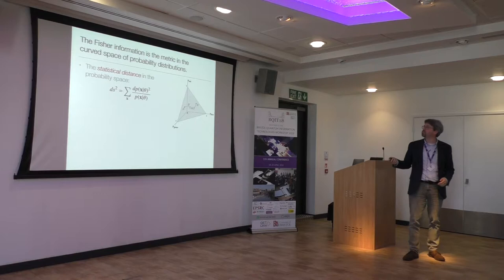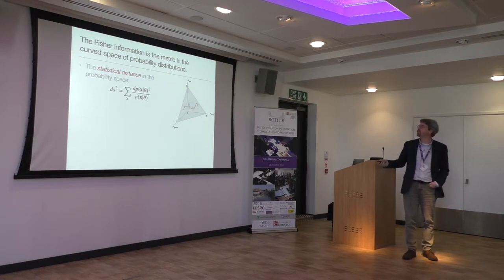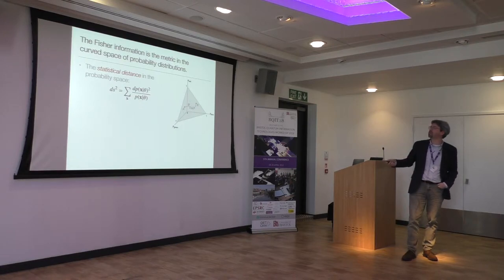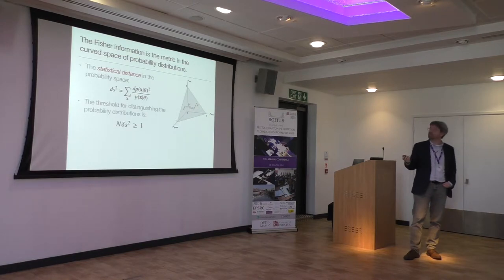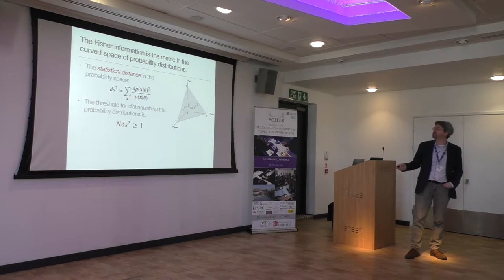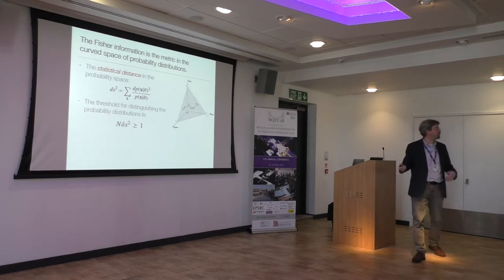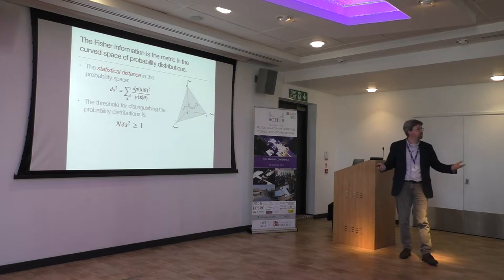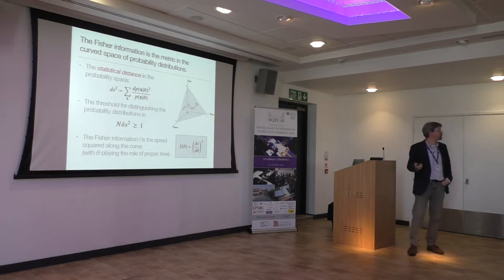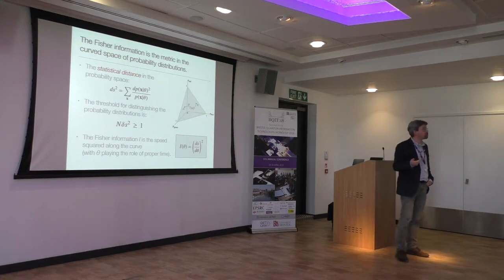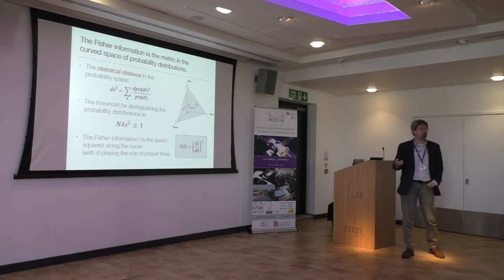The statistical distance in this space has a numerator somewhat like the invariant distance from special relativity, but now you have one over the probabilities, which can blow up when probabilities go to zero. The threshold for distinguishing two probability distributions is a small distance in this space, multiplied by the number of samples; if that exceeds one, the distributions are distinguishable. The Fisher information is defined as (ds/dθ)², the velocity squared in this space — interpreted as the amount of information you get per sample on average.